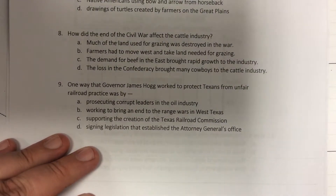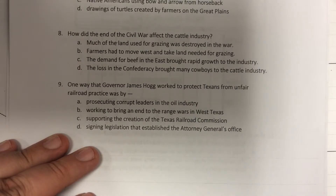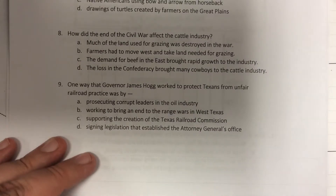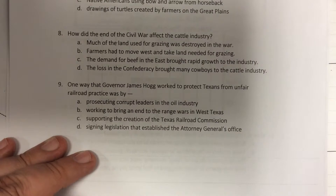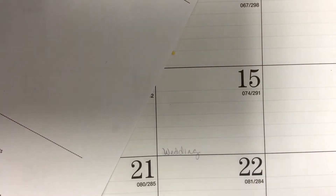Question 9: One way that Governor James Hogg worked to protect Texans from unfair railroad practices was by: prosecuting corrupt leaders in the oil industry; working to bring an end to the range wars in West Texas; supporting the creation of the Texas Railroad Commission; signing legislation that established the Attorney General's Office.